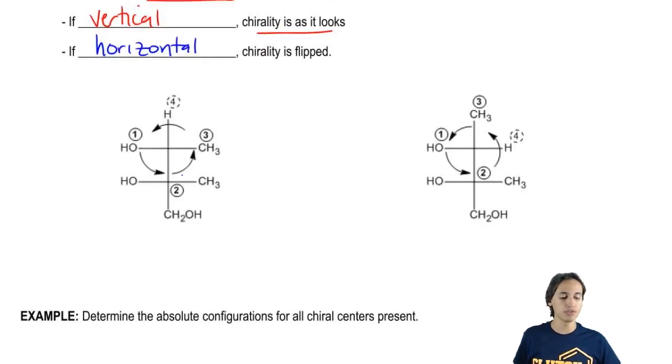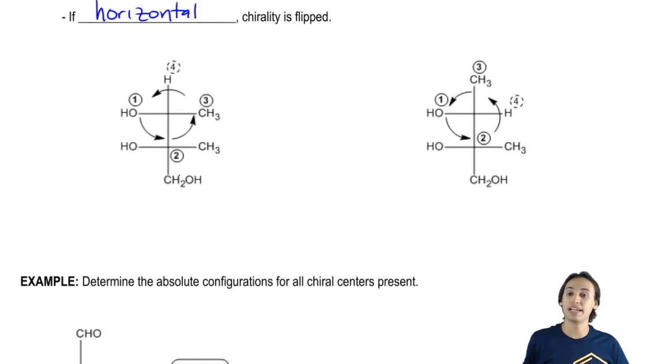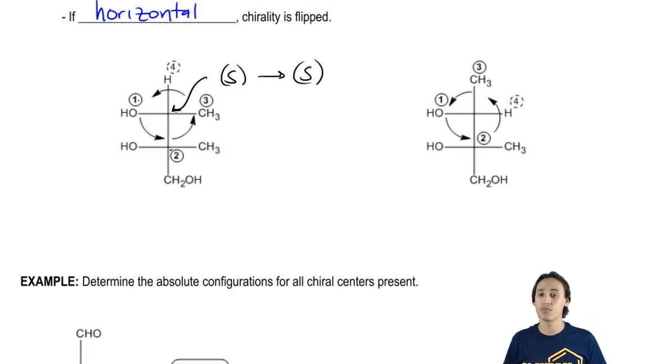So here I have two examples. This would be an example where H is vertical. So notice that my fourth priority group is vertical. So that means it's going to be as it looks. So I'm just going to say one to two to three. It's going in an S direction. So that's actually going to be the final answer. The final answer for this chiral center would just be S. Does that make sense so far?